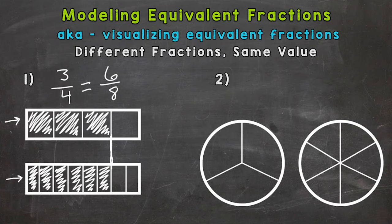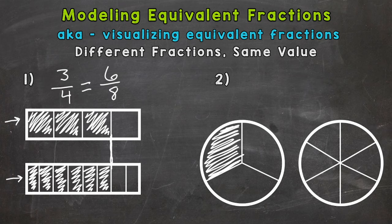So let's take a look at number two, where we have two circles that are the same exact size, but cut into a different amount of pieces. The first circle on the left is cut into three pieces, or thirds. So let's fill in one of those pieces, and that will represent one-third. So we just modeled one-third.